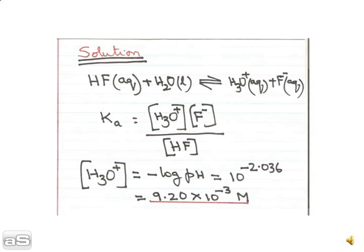Let us look into the solution of this problem. We write the equation: HF aqueous plus H2O liquid equals H3O plus aqueous plus F minus aqueous. The dissociation constant Ka equals H3O plus times F minus divided by HF.